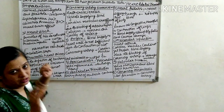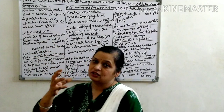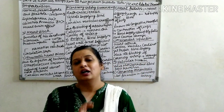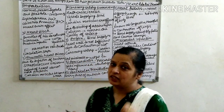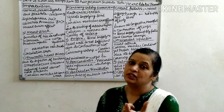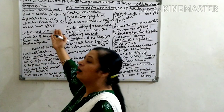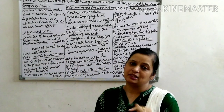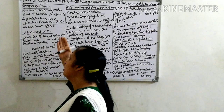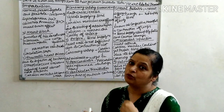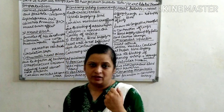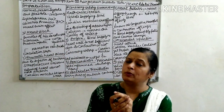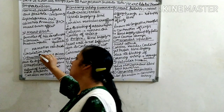Now we talk about heart block. As discussed in our previous video about the bundle of His, when the bundle of His does not work properly, the problem of heart block is created. The SA node produces impulses and these impulses travel to the ventricle via the bundle of His. When the bundle of His does not work properly, the impulses do not reach the ventricle, and circulation stops.